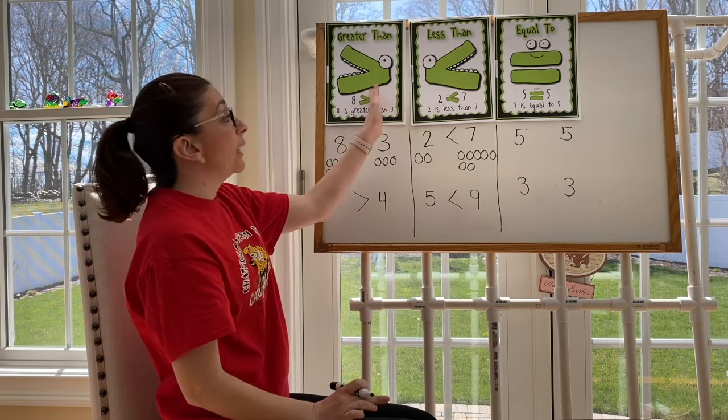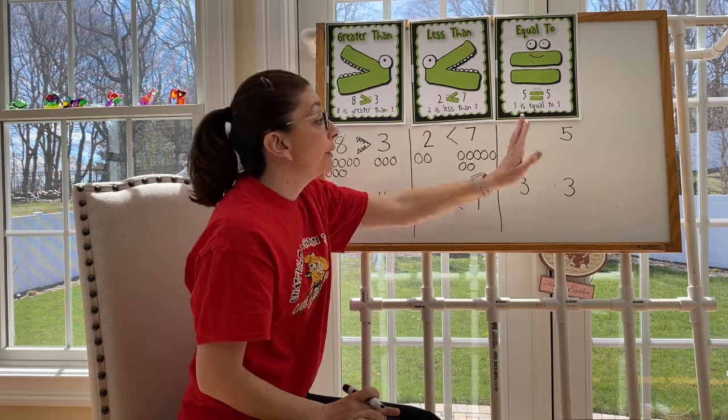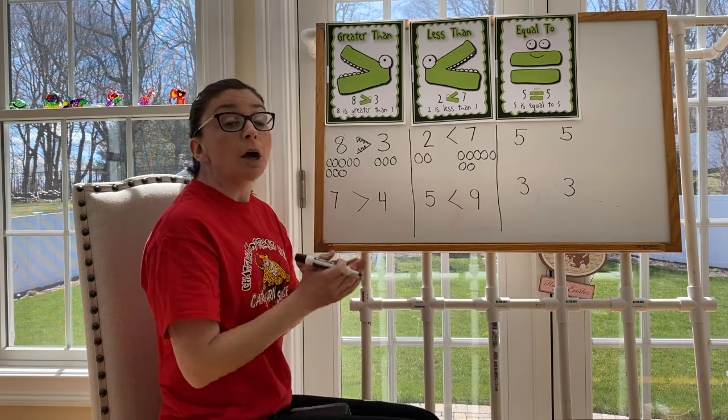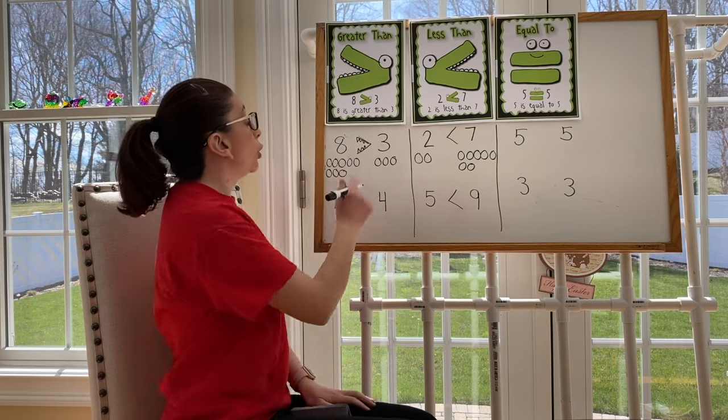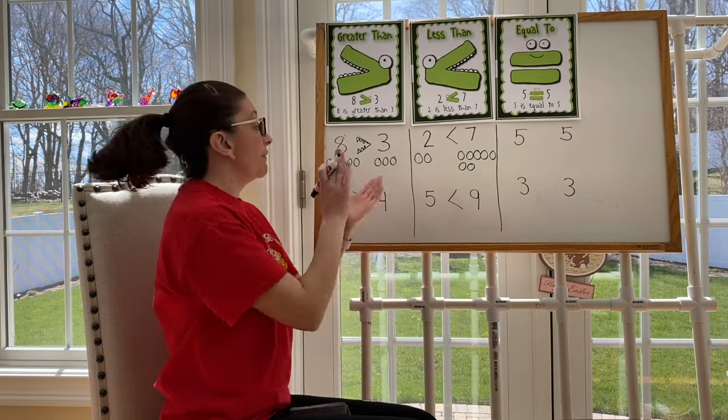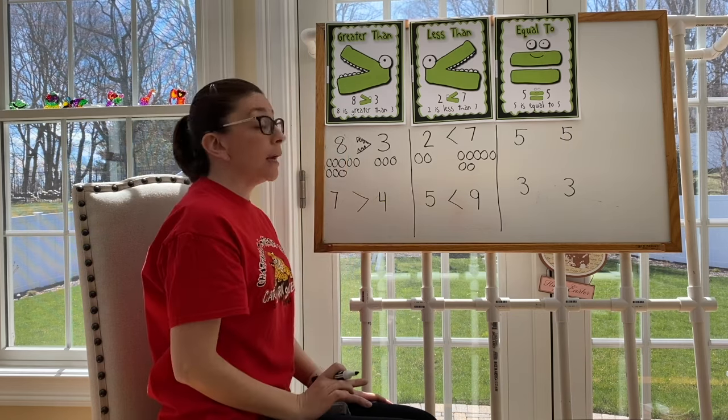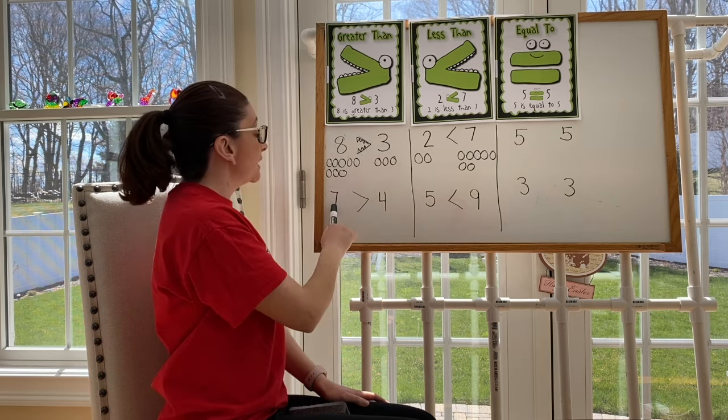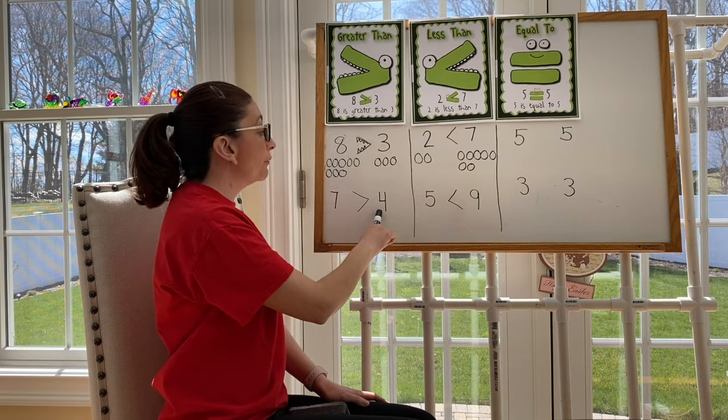Let's review greater than and less than before we move on to equal. So greater means more. When you use your arrow, you want the wide end of your arrow to face that bigger number. Eight is greater than three. Seven is greater than four.